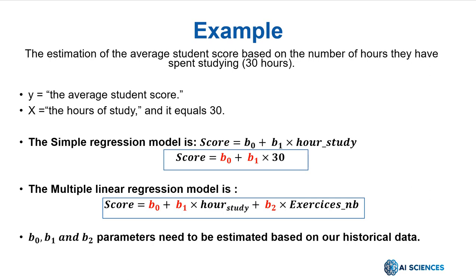The regression model we want for the score prediction is score equals b0 plus b1 times hour study. In this model, the b0 and b1 are coefficients. These coefficients are what we need in order to make predictions about our score.